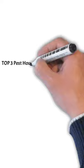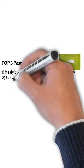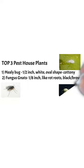Here's a mealy bug — half inch, white, oval-shaped and cottony. Fungus gnats are about an eighth of an inch, they like roots and rot, and they're brown and black. And the third one is aphids — they're green, brown, or black, and about one quarter inch.